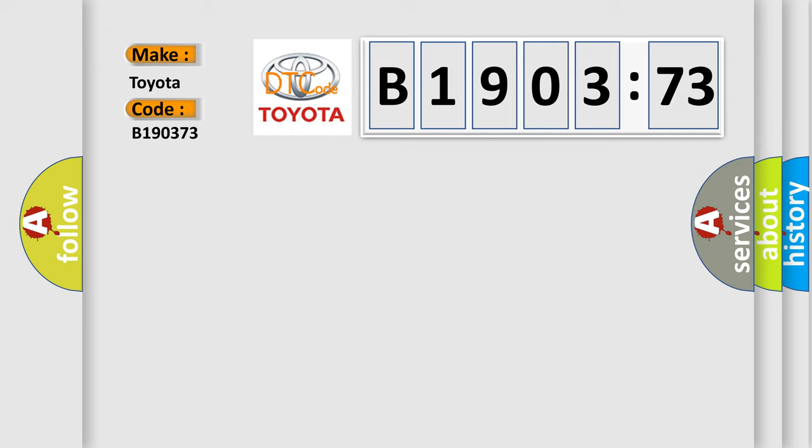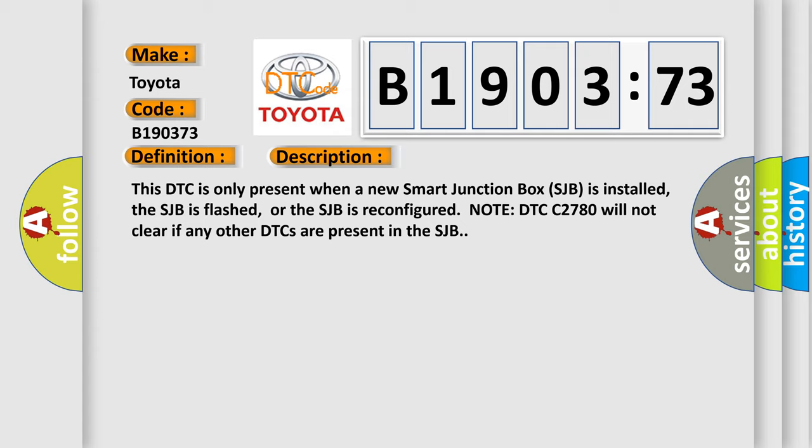The basic definition is: AQ in manufacturer substate. And now this is a short description of this DTC code. This DTC is only present when a new smart junction box SJB is installed, the SJB is flashed, or the SJB is reconfigured. Note: DTC C2780 will not clear if any other DTCs are present in the SJB.